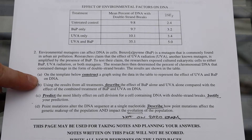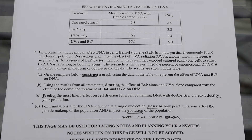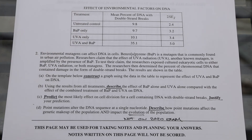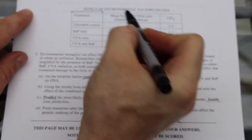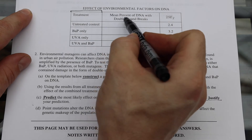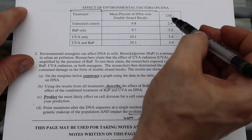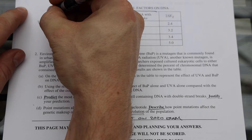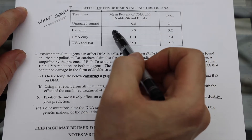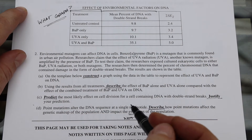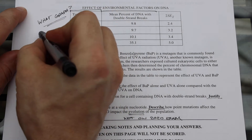Now I am ready to begin answering Part A. There is a template on the next page and I need to construct a graph using the data in the table. I see a column for treatment, the mean percent, and the standard error. Before I even start building a graph, I want to identify what kind of graph. It doesn't have anything to do with tracking changes over time — it has different categories, so I am going to assume this will be a bar graph because we are comparing different categories.